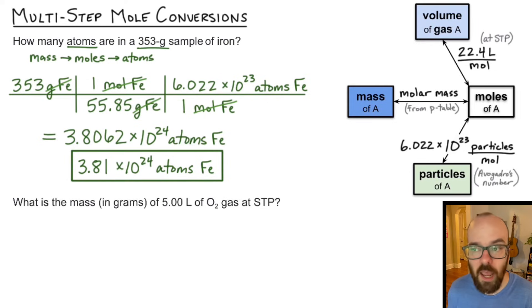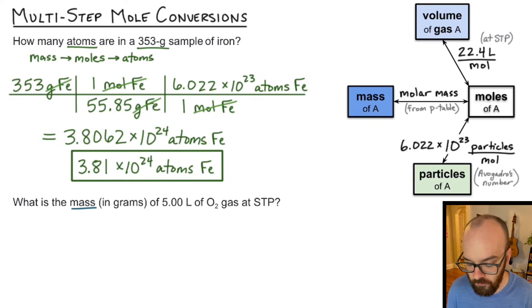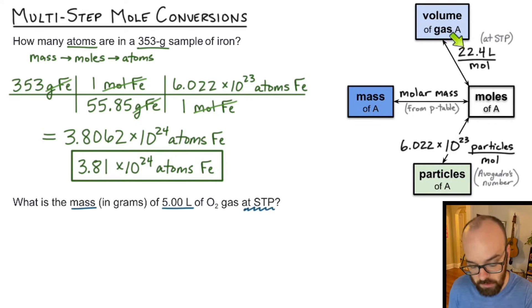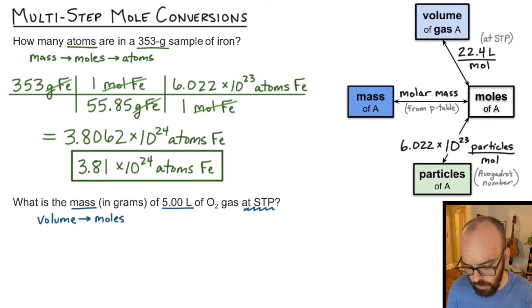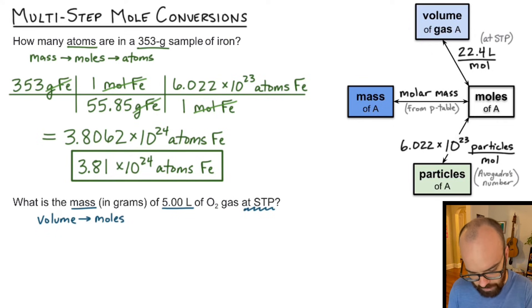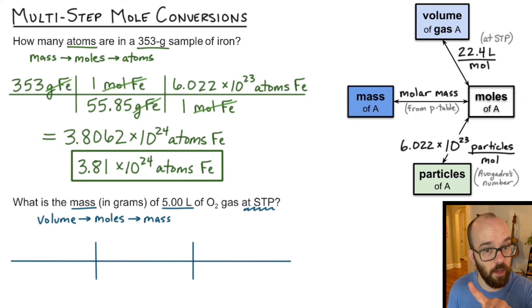Let's take a look at a second example — I'll approach it the same way. The problem says: what is the mass in grams of 5.00 liters of oxygen gas at STP? The STP is important because it tells me I can use 22.4 liters per mole as a conversion factor. I'm starting with liters, or volume. The only thing I can convert to from volume is moles, so: volume → moles → mass. Again I have two conversions, so I need a three-part conversion table.